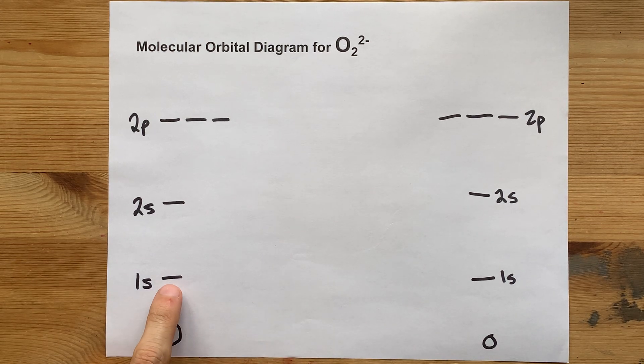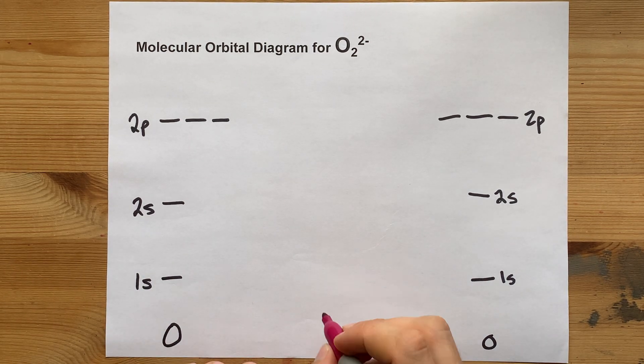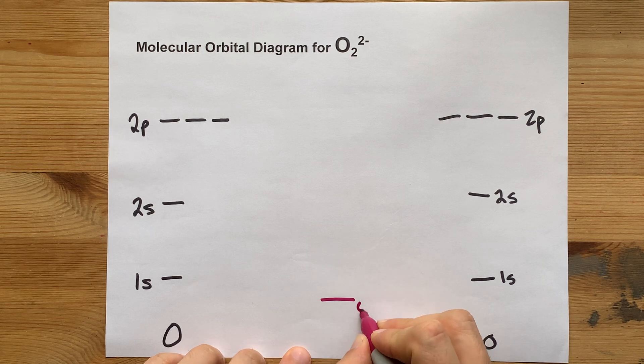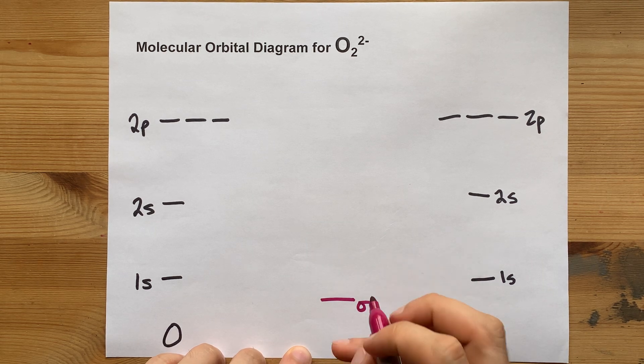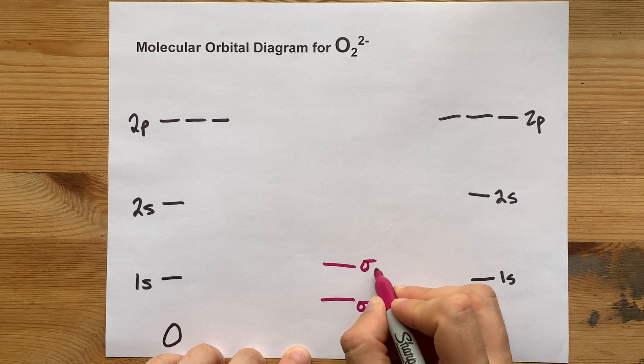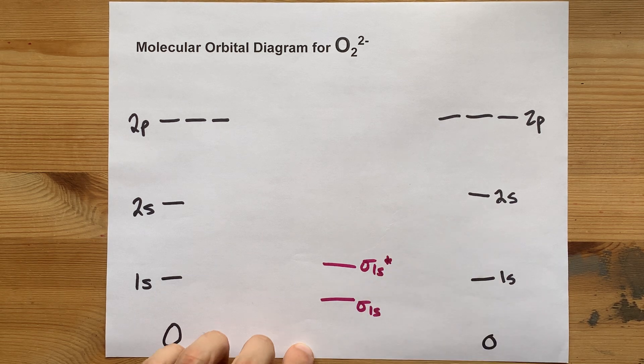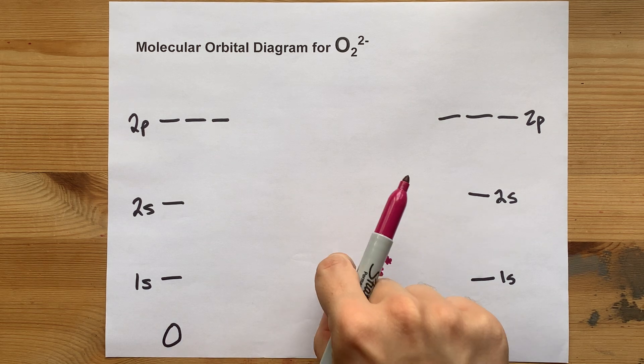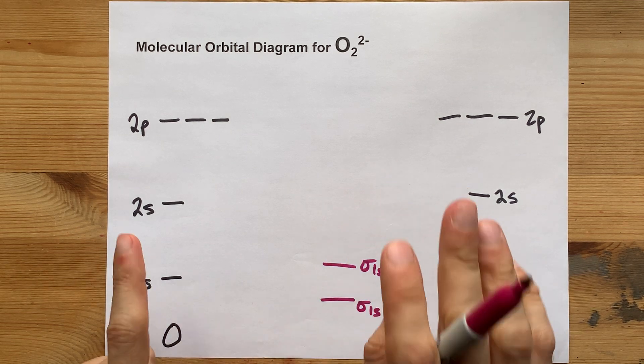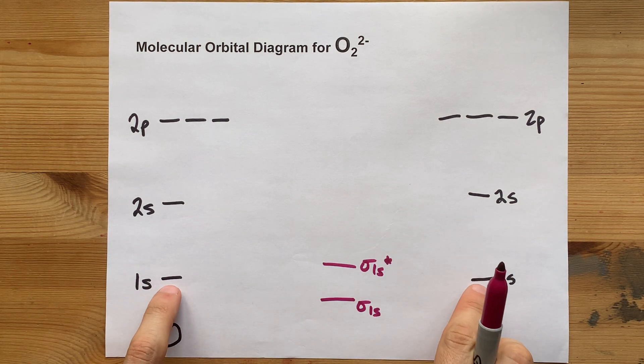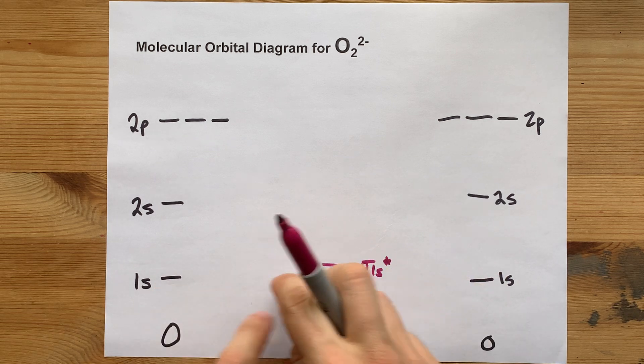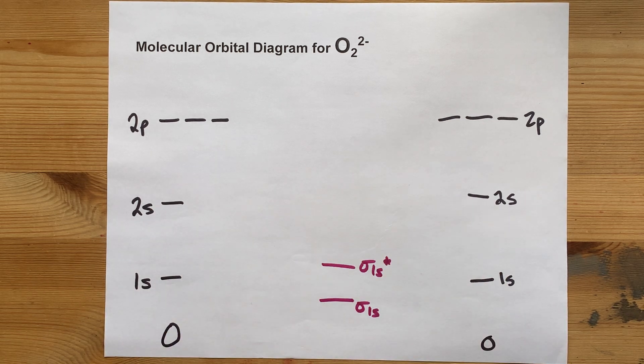What happens when the 1s orbitals overlap? Well, they create sigma 1s bonding orbitals and sigma 1s antibonding orbitals. We show that with an asterisk. The average height of these two lines should be the same as the average height of these two lines, like it should be evenly spread between the two.